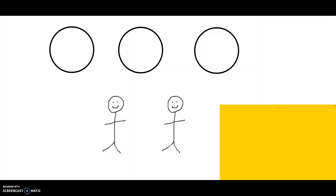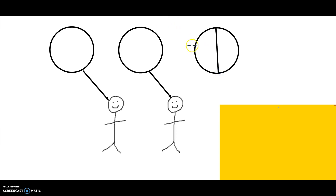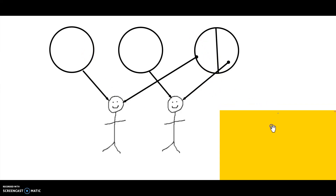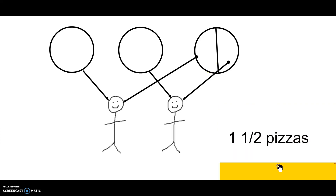We want to keep our pictures simple — just sketch to solve the math. My two brothers, my three pizzas. First I'm going to ask myself: is there enough for each brother to get a whole pizza? Yes, I'll give a whole pizza to each brother. Now I have one pizza left over. I'm going to cut that pizza in half, and give each brother half of the last pizza. So each brother gets one and a half pizzas.